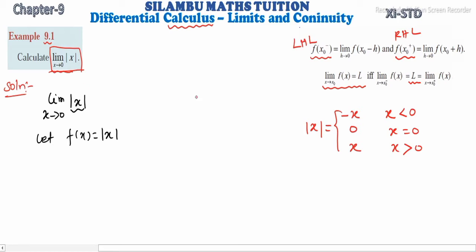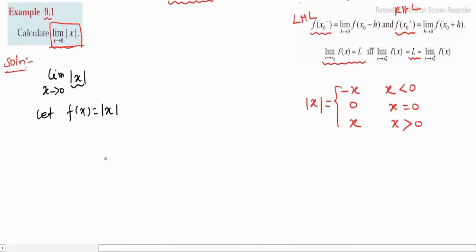So to find this limit value, we find both the left-hand limit and the right-hand limit. First, we choose x greater than 0. If x is greater than 0 and tending to 0, then mod x equals positive x. We find this limit approach and need to check the value.